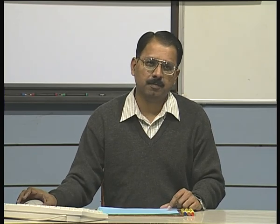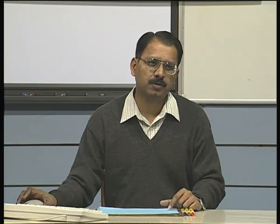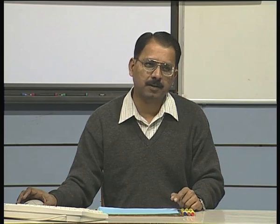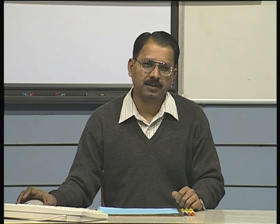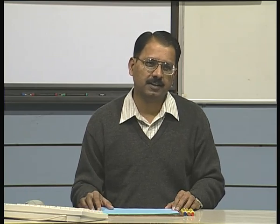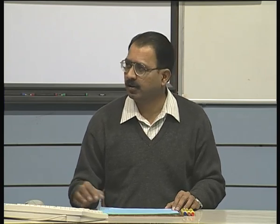As I said, a Bezier curve is an approximation curve. When I say approximation curve, whatever inputs you give to define the curve, all the inputs are not satisfied — they are used to define the curve but the curve does not necessarily pass through all of them. For example, with a Hermite curve in four-point form, the curve necessarily passes through all four points. But with Bezier, the four control points define the curve but the curve does not pass through all the points. That is why it is classified as an approximation curve.